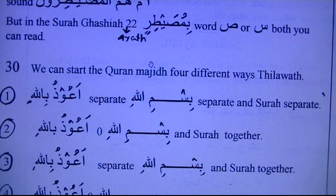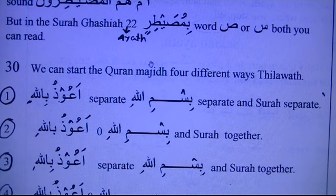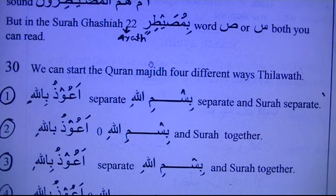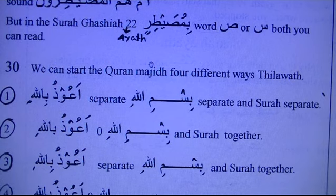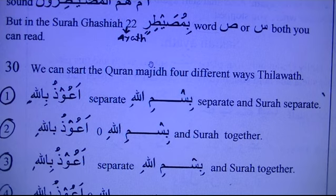Option two: say A'uzubillah, then stop, then say Bismillah — and after Bismillah, don't stop; go directly into the first part of the surah. This is not compulsory. For example: A'uzubillah minash shaytanir rajeem — stop — Bismillahir rahmanir raheem — then continue. After Bismillah you join directly to the surah, so be very careful as many rules apply.